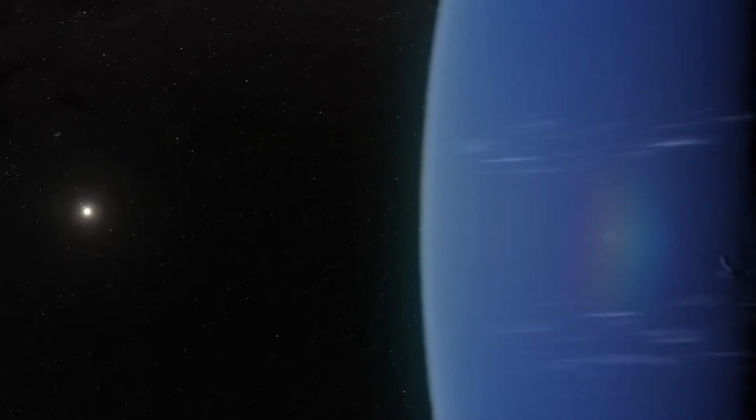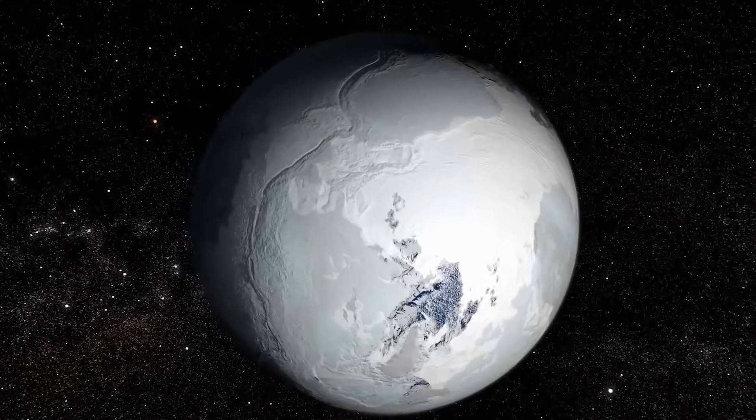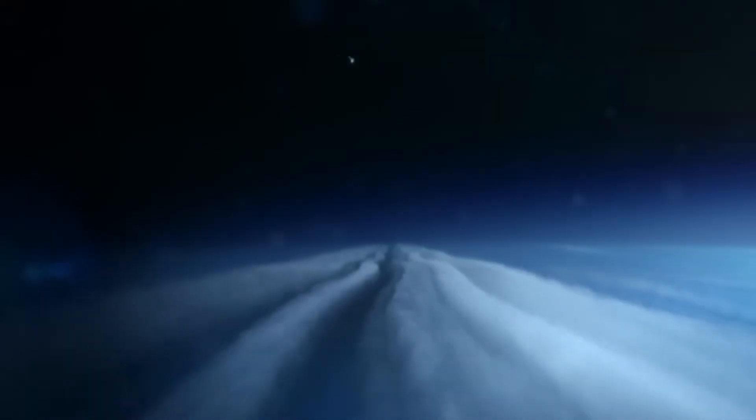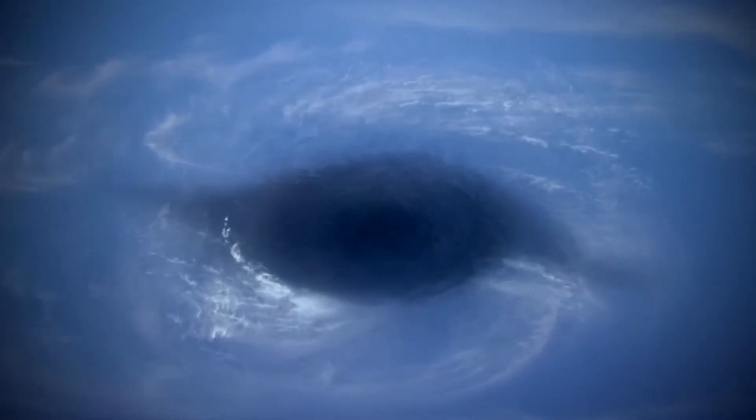Similarities to Jupiter's great red spot: the great dark spot is often compared to Jupiter's great red spot, a long-lived anticyclonic storm on Jupiter. Both storms are large, long-lasting features in the atmospheres of their respective planets, but the dynamics and composition of their atmospheres are different.